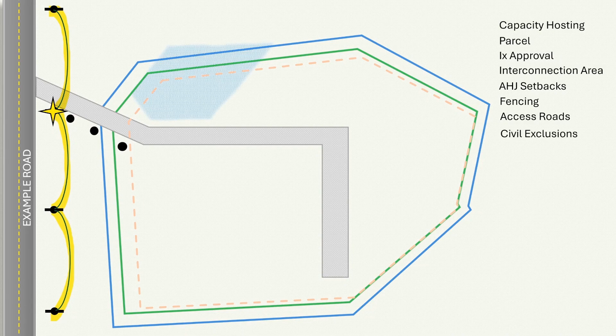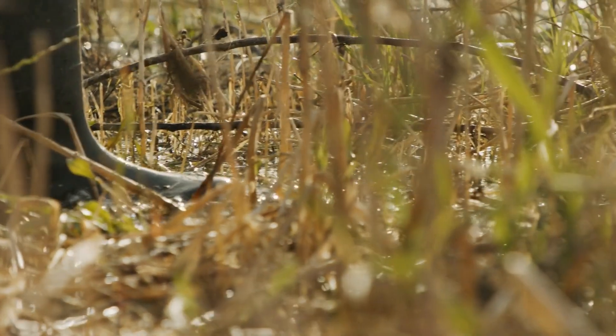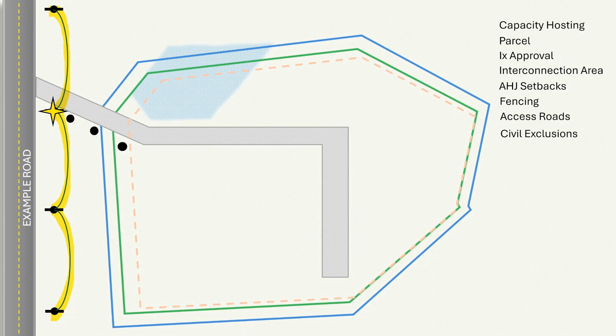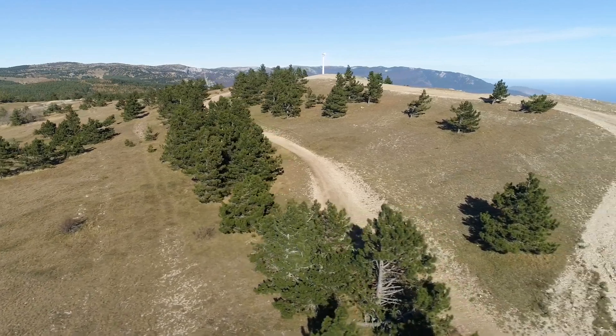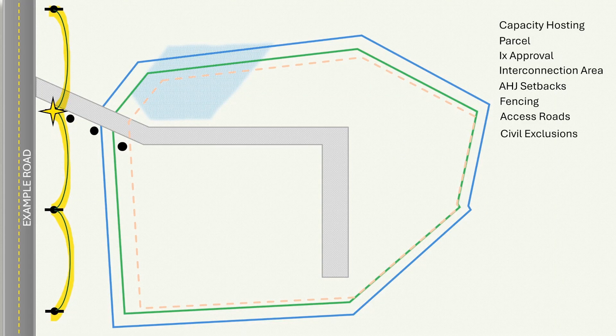The next step will be identifying any civil exclusions. This could be any number of things including wetlands, unsuitable soil, steep terrain, rocky soils, corrosive soils, or even planned areas that we need for stormwater runoff. Regardless, we will know we cannot put arrays or equipment pads in those areas.